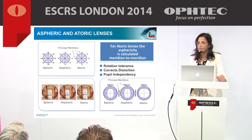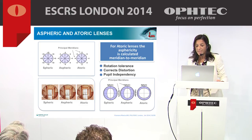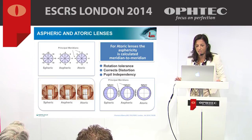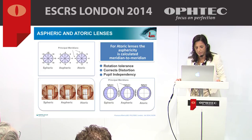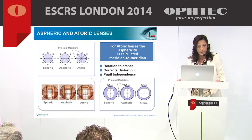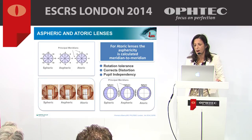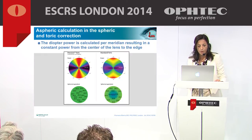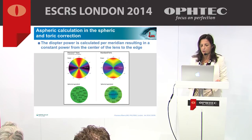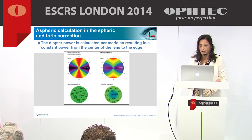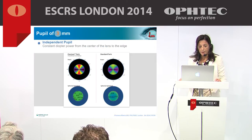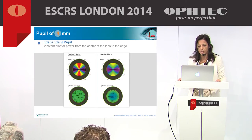In the atoric lens, note how the relative asphericity correction factor changes from meridian to meridian. Each meridian of the lens has been adjusted by changing the amount of asphericity from one meridian to another. The atoric lens can therefore provide a wider field of vision and optical performance superior to conventional lens designs over a wide range of lens powers. With this approach, the spherical equivalent diopter power will be constant from the center of the lens to the edge, which is especially important in larger pupil profiles.